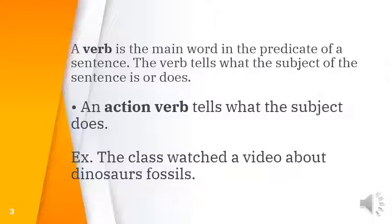Today's lesson focuses on two types of verbs: if the verb tells what the subject is, it is a linking verb; and if the verb tells what the subject does — the action the subject performs — it is an action verb.